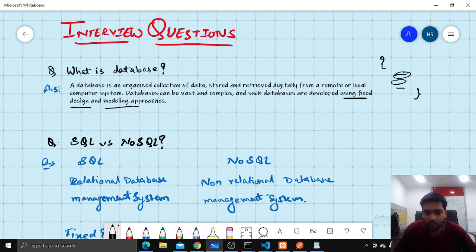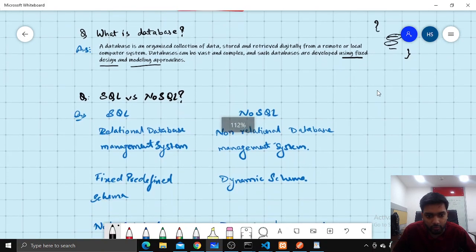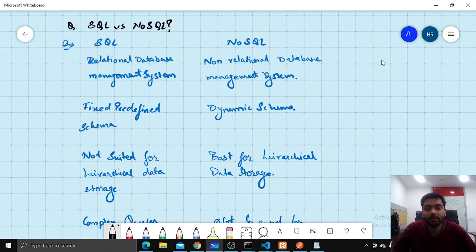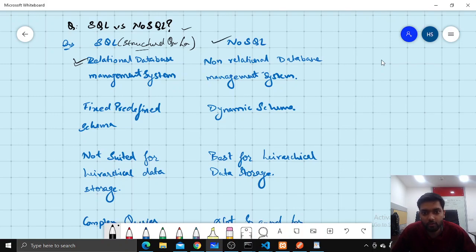Let's talk about the second question: SQL and NoSQL differences. This is asked many times in interviews. So SQL are the way to implement relational databases. Structured query language is a way to implement relational databases and NoSQL are non-relational databases. They are stored in the form of objects or JSON format.